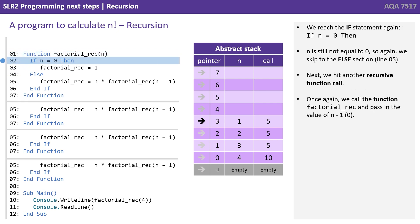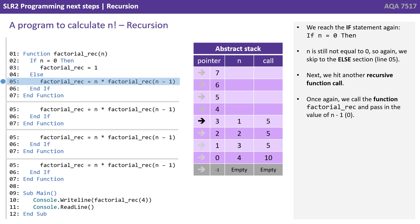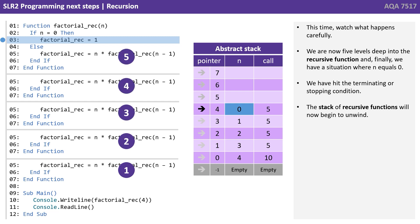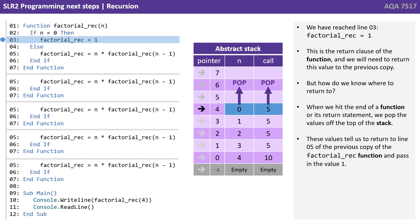We reach the if statement: if n equals 0 — still not the case, n is still not 0 — so we skip to the else, line 5. We hit yet another recursive function call; we call factorial_rec and pass in the value of n minus 1, where n is 1, so 1 minus 1 is 0. We're now 5 levels deep into our recursive function, and finally we have a situation where n does indeed equal 0. We've hit the terminating or stopping condition. The stack of recursive functions will now begin to unwind. We've reached line 3 — factorial_rec does indeed equal 1.